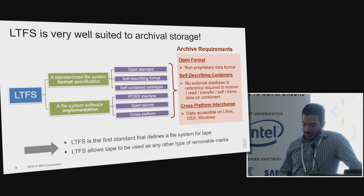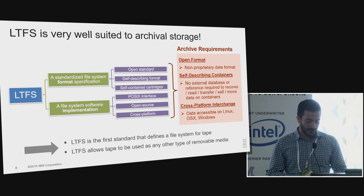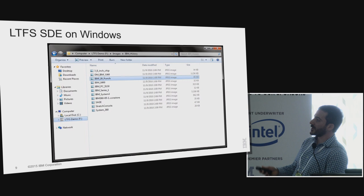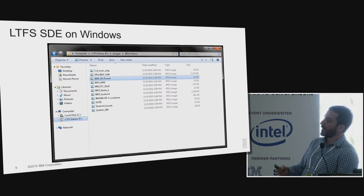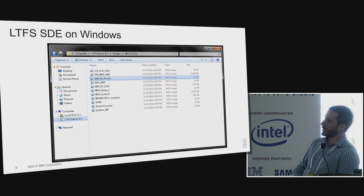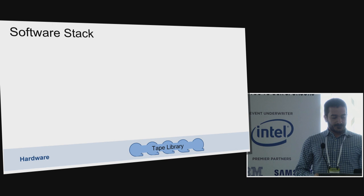This picture basically shows files on tape using LTFS. This is actually a tape drive attached to a Windows laptop over USB, with a cartridge mounted using LTFS. You can see that in the Windows File Explorer, you cannot even tell the difference between tape and disk - you're able to drag and drop files, copy, delete, rename, and do all the standard things you could do with an HDD.